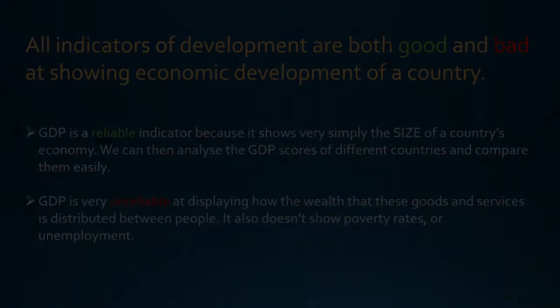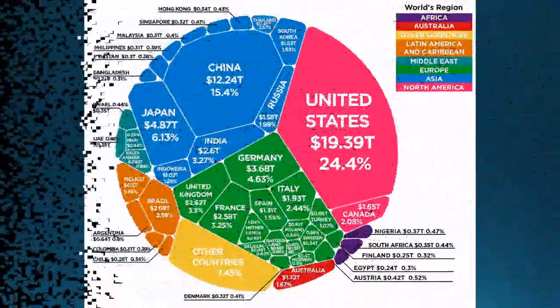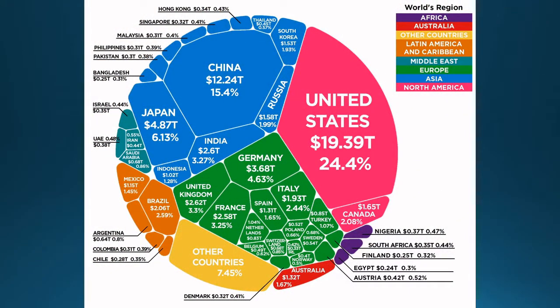GDP also doesn't show if a country is affected by high rates of poverty or unemployment. The total value of the world's GDP is around 92 trillion dollars — that's trillion with a T. This diagram shows all the biggest contributors to the global GDP. You should immediately notice that the largest contributing country is the USA, which produces roughly a quarter of the world's GDP every single year. Second is China, which has a GDP about 7 trillion dollars less than the US. The continents that contribute the most are North America, Asia, and Europe. Feel free to pause the video to have a longer look at the diagram.